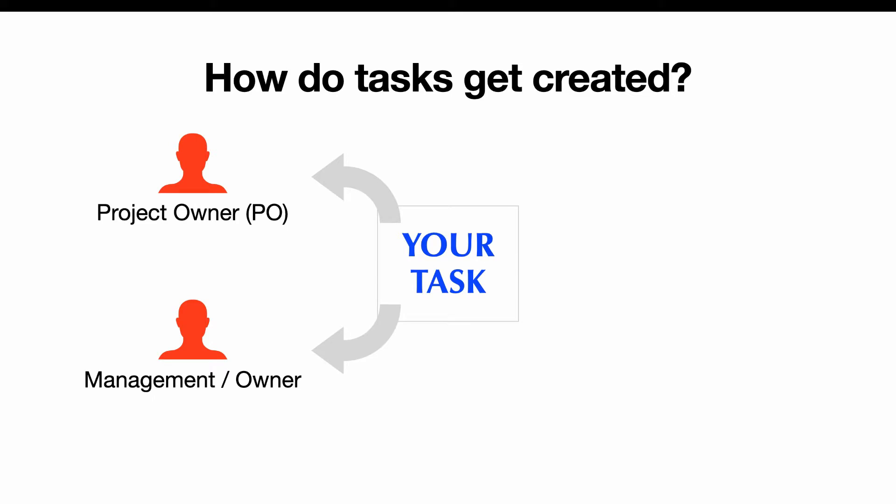The next one would be management or the owner. So if management or the owner wants a specific feature, or they notice a bug on the website and want it fixed, those will usually take high priority. The next one will be a designer, from the UI/UX department. The stories they create will typically involve implementing new features, new designs, or maybe changing the layout or coloring of a particular part of the website.